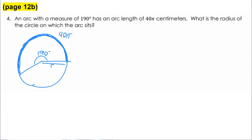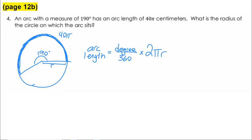We remind ourselves that arc length equals part of the entire circumference of the circle, and circumference is 2πr — where r is what we want to find. They gave us arc length and degrees, we just need to find r. Plugging in: the arc length is 40π, the degree is 190, and that's multiplied by 2πr over 360. On the right-hand side, 190 times 2 gives 380, so we have 40π = (380/360)πr.